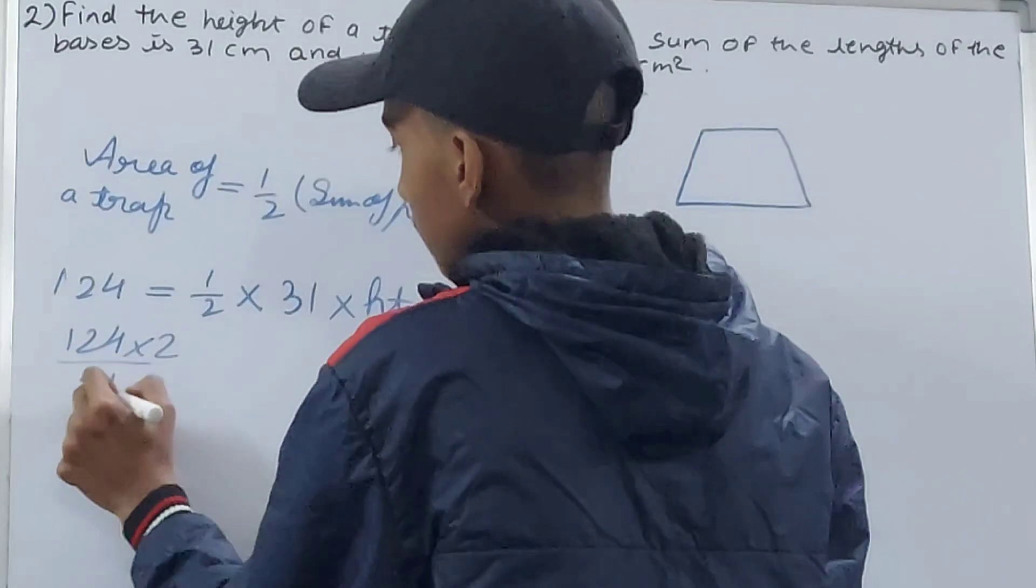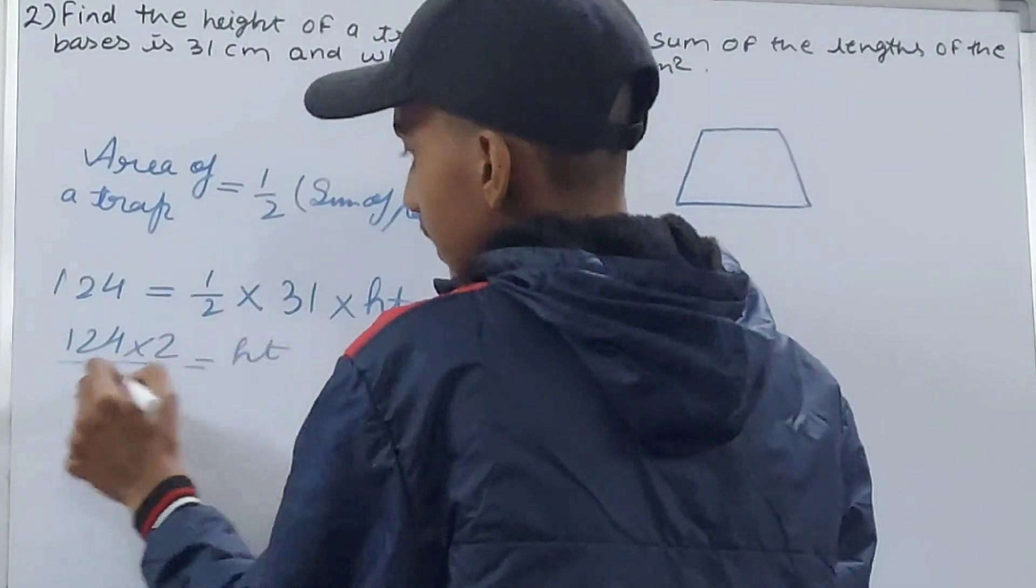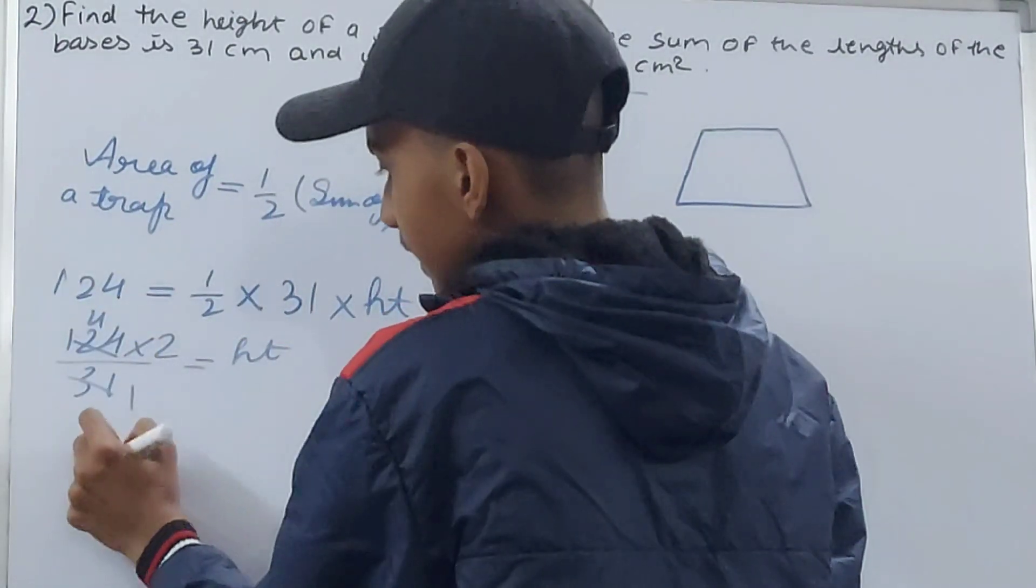times 2, divided by 31, equals the height. See, this will cancel four times, so height equals